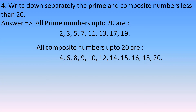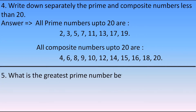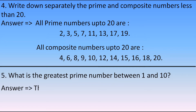The fifth question: what is the greatest prime number between 1 and 10? The greatest prime number is 7, because after 7 the next number is a two-digit number greater than 10. So the greatest prime number between 1 and 10 is 7.